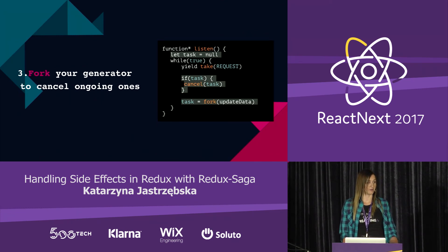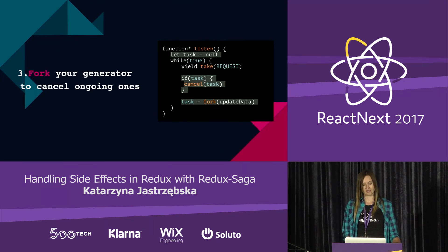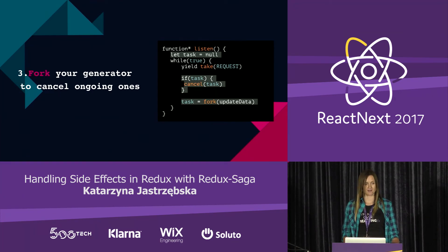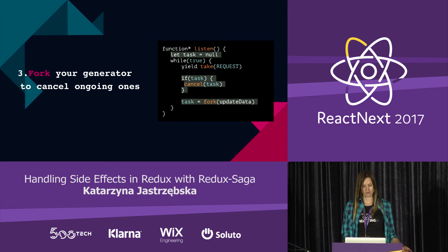The first step to enable cancellation is to not just `call` our generator, but `fork` it — to get a reference to the generator instance and easily cancel it. If the task already exists, we cancel it and then fork a new generator. The syntax is pretty simple.